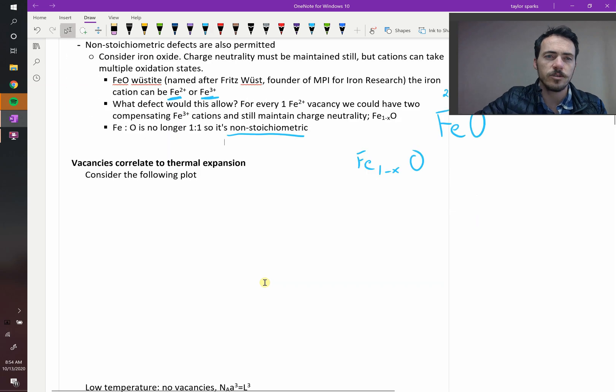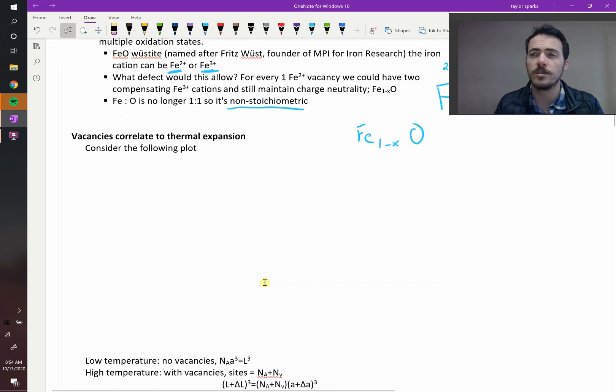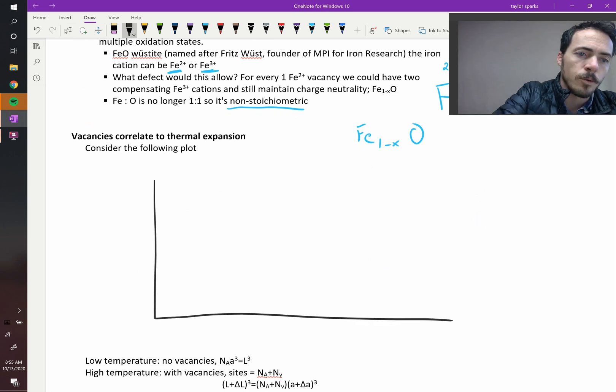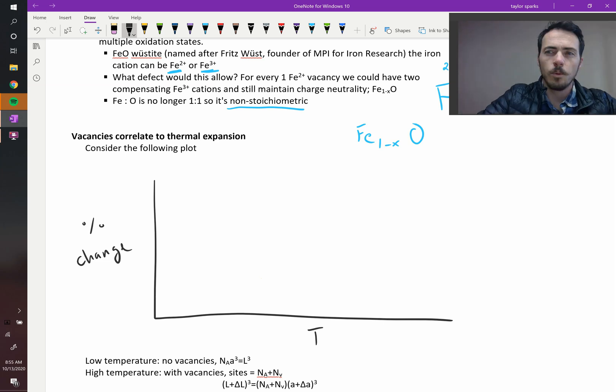Now, here's an interesting question. How should vacancies correlate to thermal expansion? Alright, let's take and draw this. We've seen thermal expansion before. So if we plot delta L over L, so this is the change in length over whatever its initial length was. Actually, let's just put percent change for a minute. Alright, that's our percent change, and down here is going to be temperature. What do we know about this? Well, as you warm this material, you have the following.